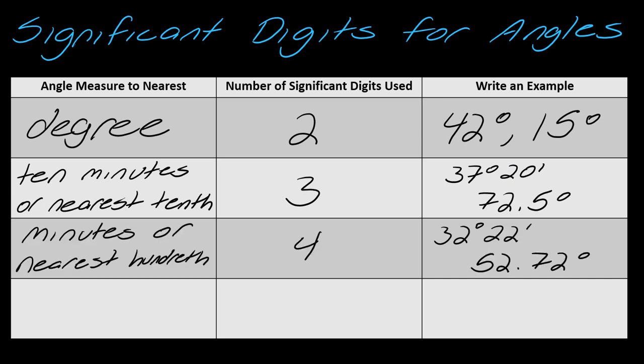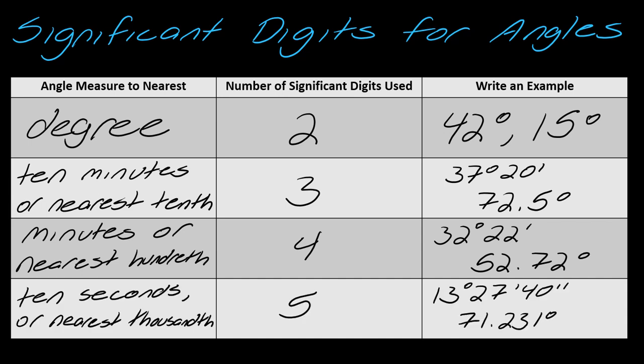Minutes or to the nearest hundredth - notice now I'm not calling out 10 minutes, just minutes in general. This has four significant digits. So if I had 32 degrees and 22 minutes, this has four significant digits. And then finally, 10 seconds or to the nearest thousandth has five significant digits. Notice I've got 13 degrees, 27 minutes, and 40 seconds. Any multiple of 10s for the seconds counts. It's something you just have to get used to looking at.